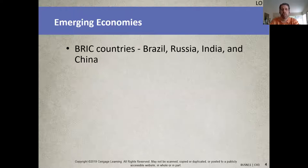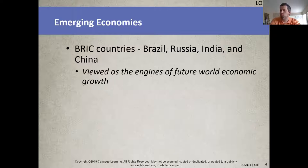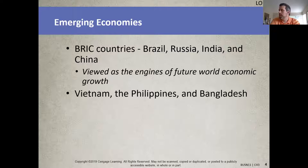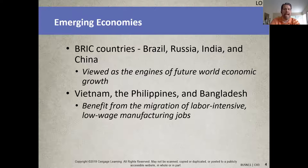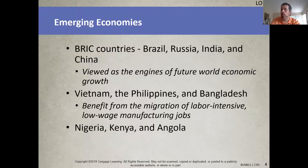The BRIC countries — Brazil, Russia, India, and China — deserve attention because of their large populations, rapid development, and robust middle class growth rates. Vietnam, the Philippines, and Bangladesh are all benefiting from the migration of labor-intensive, low-wage manufacturing jobs away from China. As more jobs are created in such locations, they will likely begin to develop robust middle classes and stabilize economies. A number of sub-Saharan African countries such as Nigeria, Kenya, and Angola also provide an enormous opportunity for economic growth.